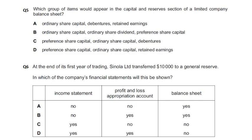Regarding the equity part — debentures come under non-current liabilities, not equity. So debentures never appear in equity. Dividends also never appear in the equity section of the balance sheet; dividends appear in the statement of changes in equity. So preference share capital and ordinary share capital are included, but debentures are not part of equity.